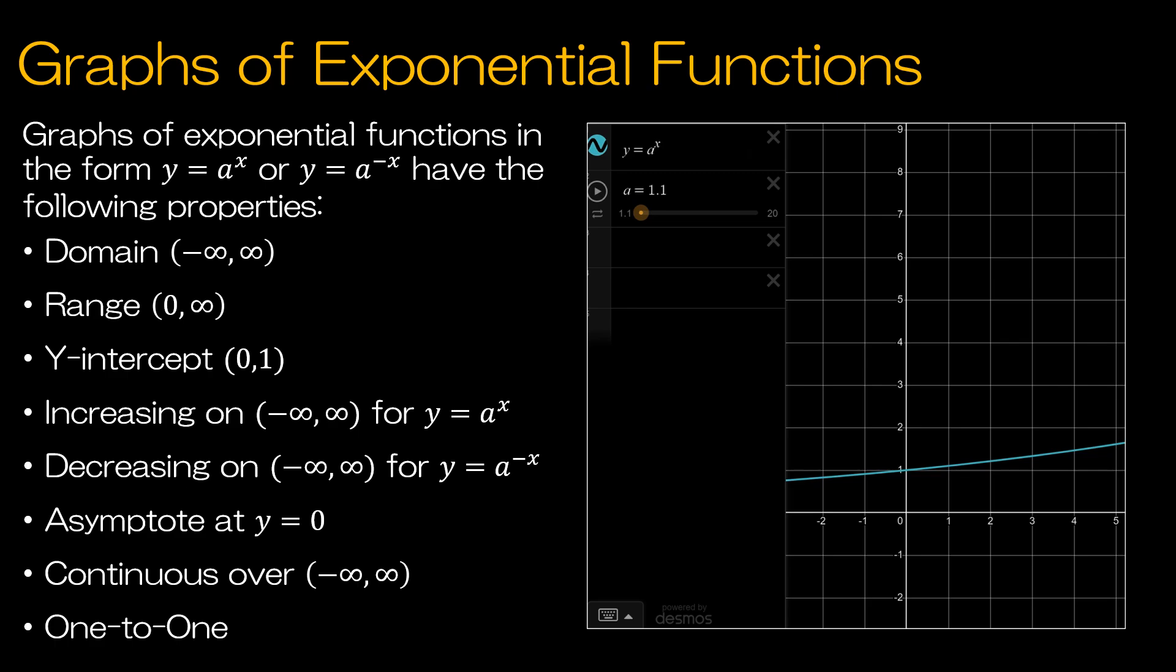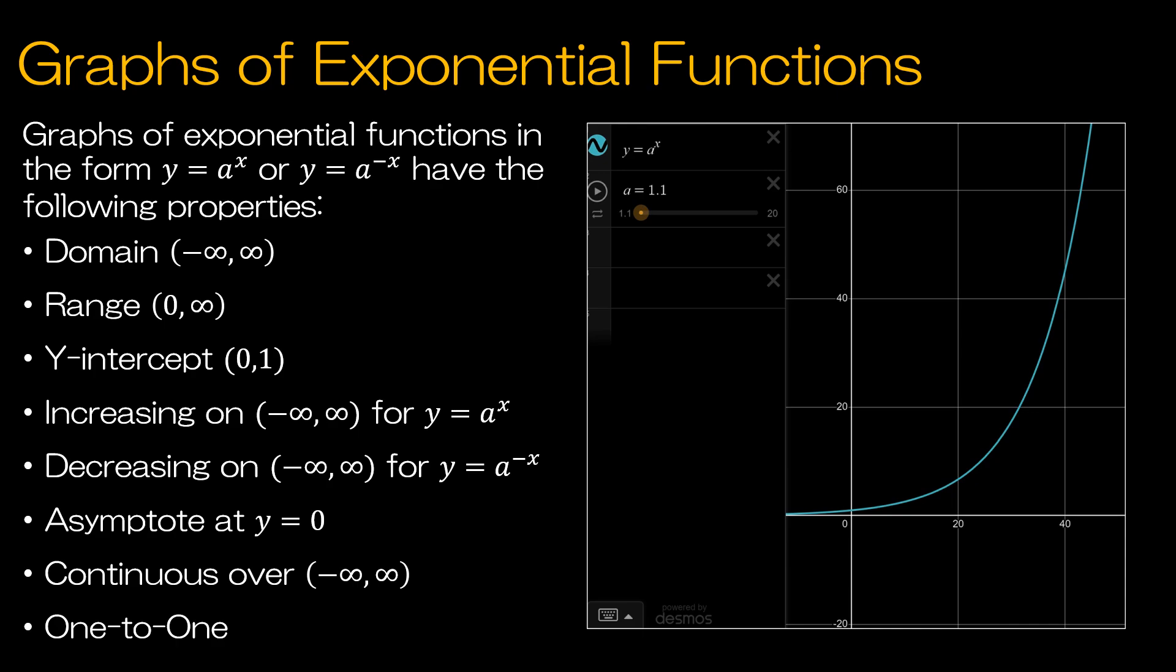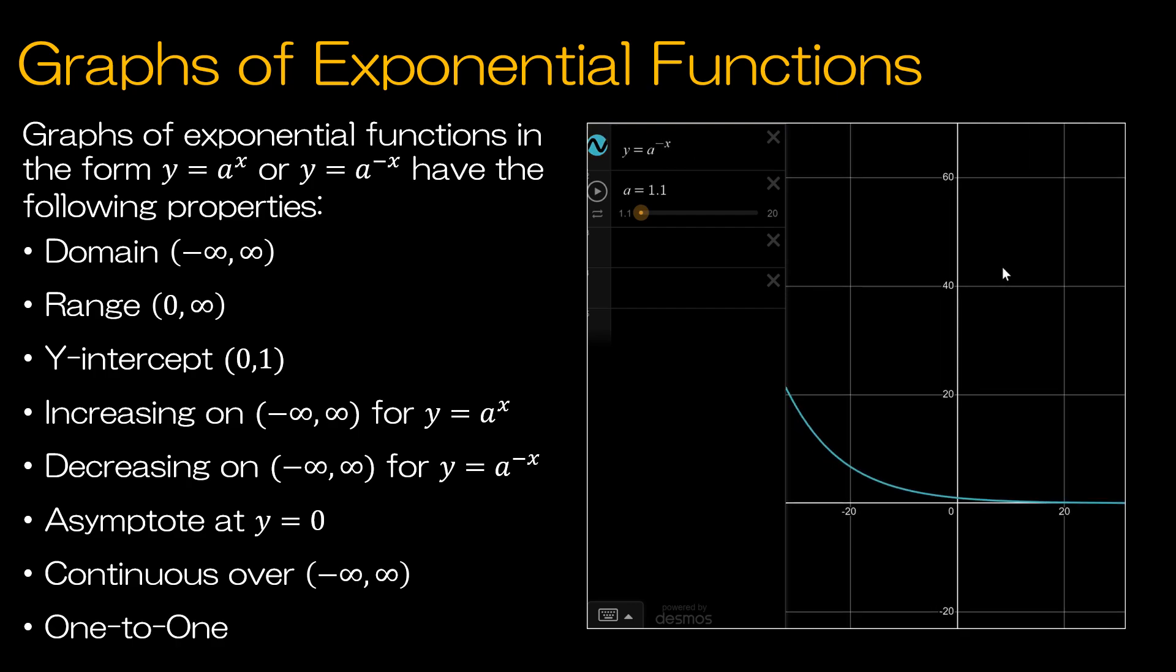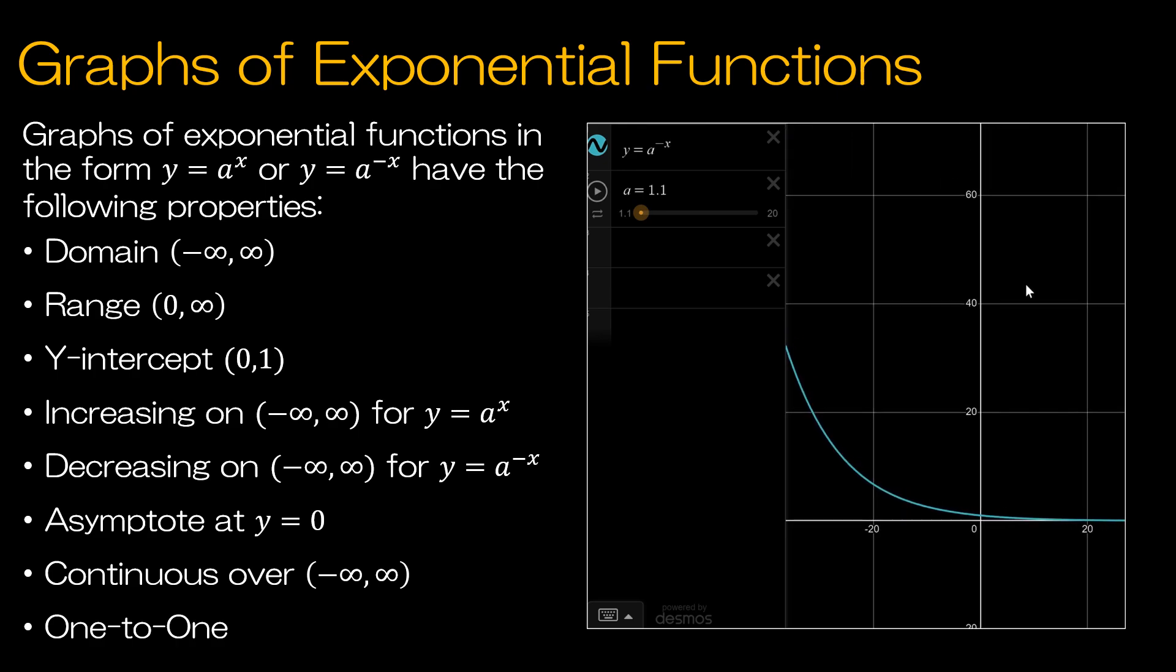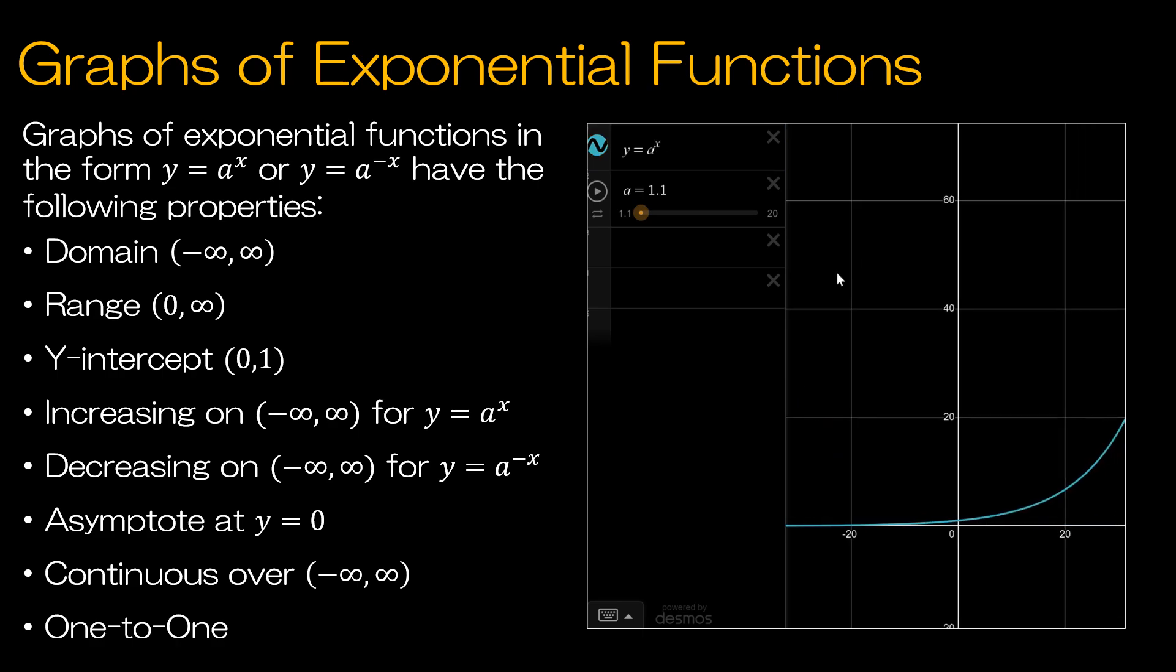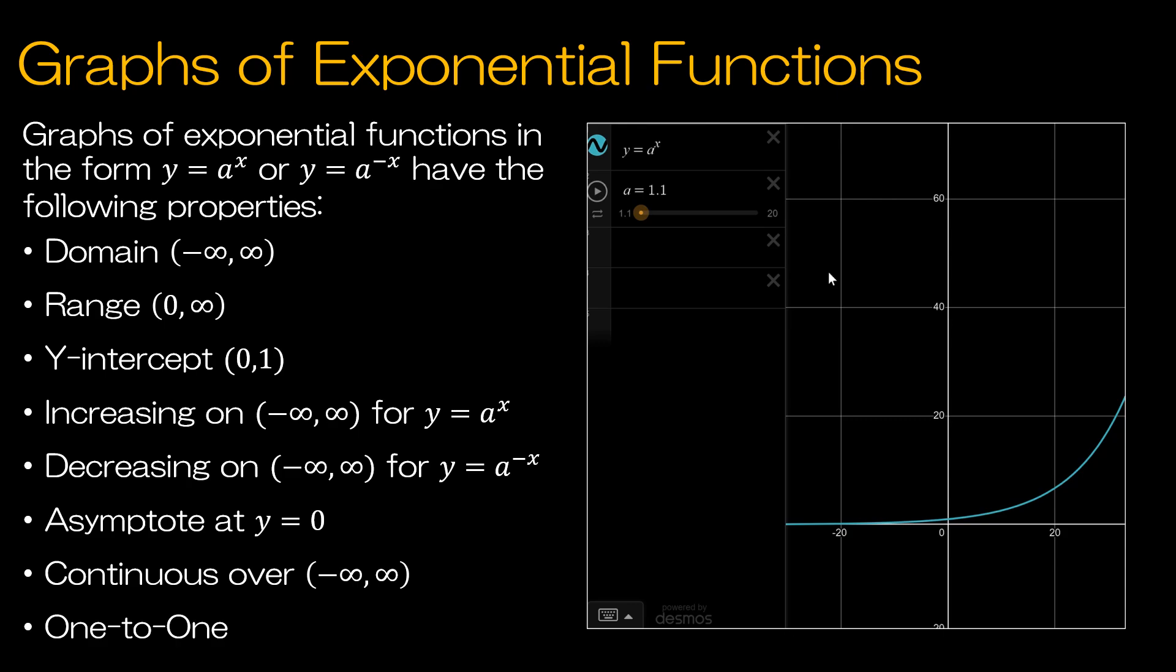Let's take a look now at what the graph of an exponential function will look like. So if the graph has the form y equals a to the x, you're going to have the following properties: The domain is negative infinity to positive infinity. Obviously I'm only showing you a little bit of that, but I can zoom out so you can see exactly what that graph continues to look like. The domain is everything. The range is from 0 to infinity. The intercept here is 0, 1. And it's increasing everywhere unless I change the exponent to negative x. And now it's decreasing everywhere. You can see how that just flipped.